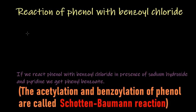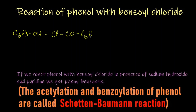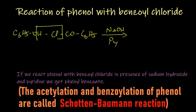The next reaction is the reaction of phenol with benzoyl chloride. C6H5OH is phenol, and benzoyl chloride is ClCO-C6H5. The reaction takes place in presence of sodium hydroxide and pyridine.